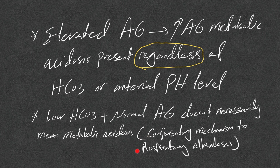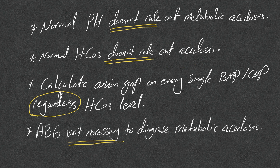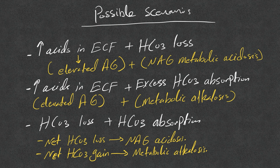Normal pH does not rule out metabolic acidosis. Normal bicarb does not rule out metabolic acidosis. Calculate the anion gap on every single BMP or CMP, regardless of bicarb level. Don't be deceived by a normal or high bicarb level. An ABG is not necessary to diagnose metabolic acidosis.